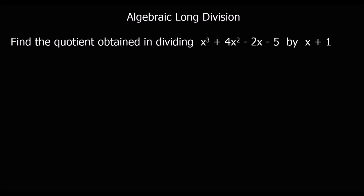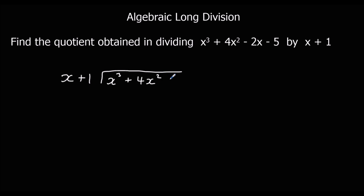Here we're going to do some algebraic long division. The question says find the quotient obtained in dividing x cubed plus 4x squared minus 2x minus 5 by x plus 1. We're going to set up a long division — a bus stop method — so we have x plus 1 on the outside and x cubed plus 4x squared minus 2x minus 5 on the inside.